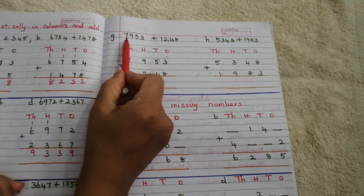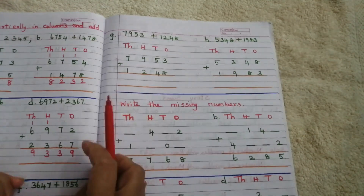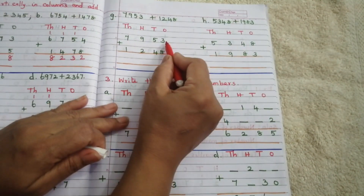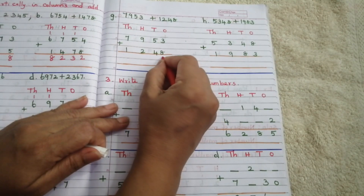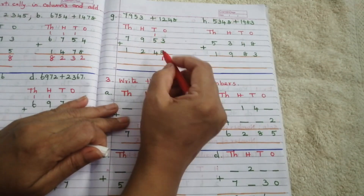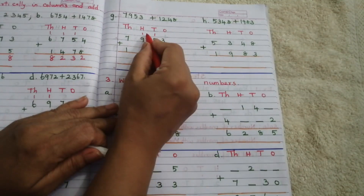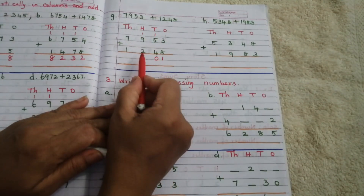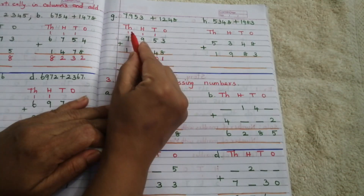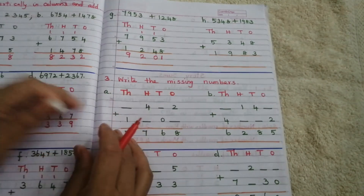Problem G: 7,953 plus 1,248. Adding 8 plus 3 we get 11 — write 1 here and carry 1. Then 5 plus 1 is 6, 6 plus 4 is 10 — write 0 here and carry 1. Then 9 plus 1 is 10, 10 plus 2 is 12 — write 2 here and carry 1. Finally, 7 plus 1 is 8, 8 plus 1 is 9. Answer: 9,201.